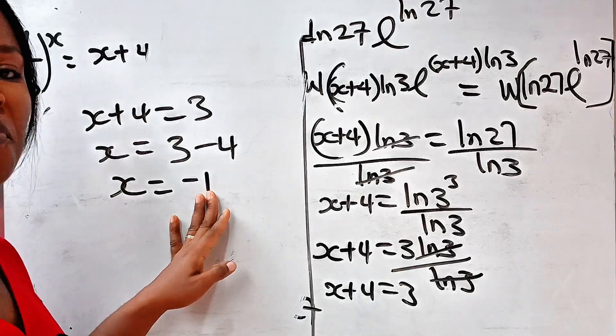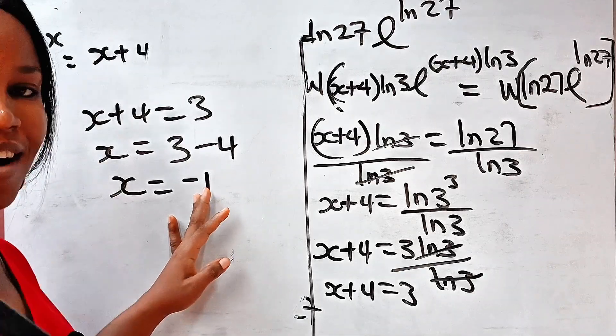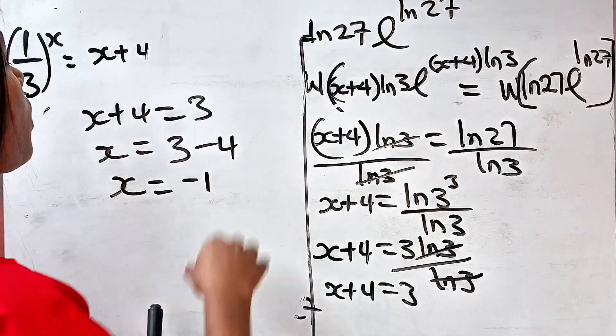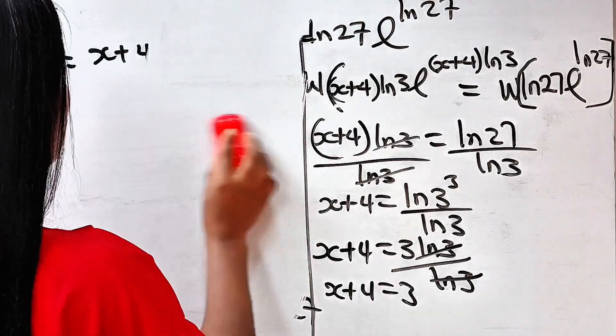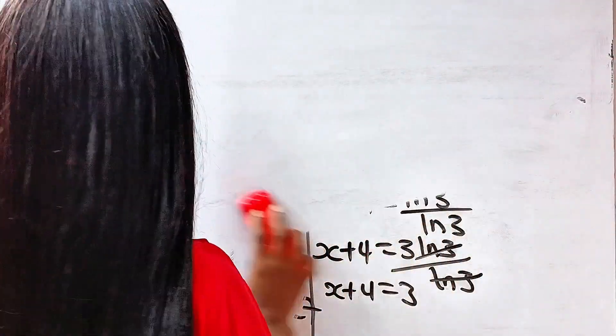So x + 4 = 3, which means x = 3 − 4 = −1. Now let's prove that this answer is correct.